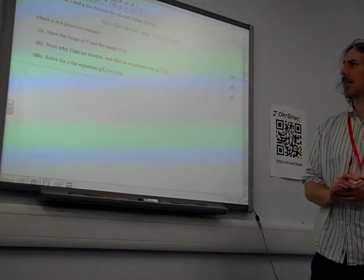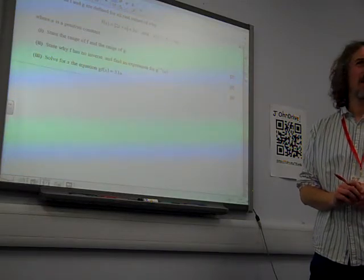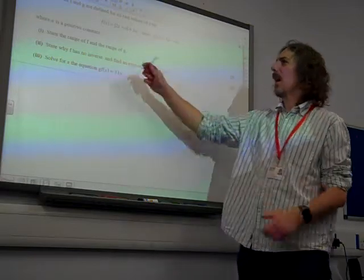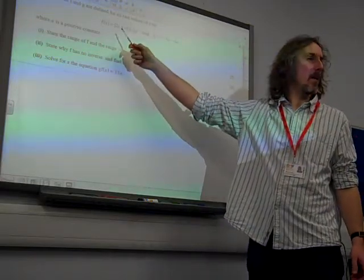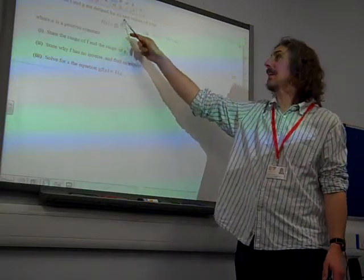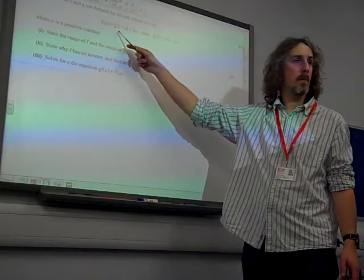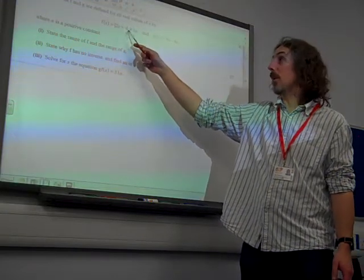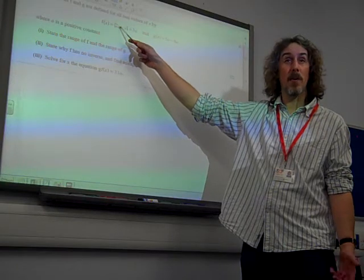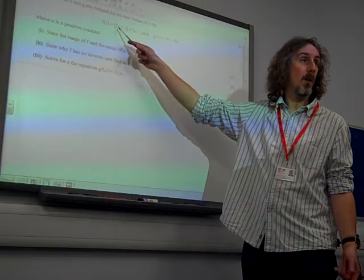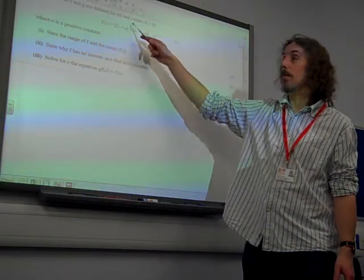It's a bit confusing having these positive constants in there. But if we think about this, f of x, the modulus sign, means anything in there is going to be positive. The smallest that could possibly be is 0, so we've got 3a plus 0.